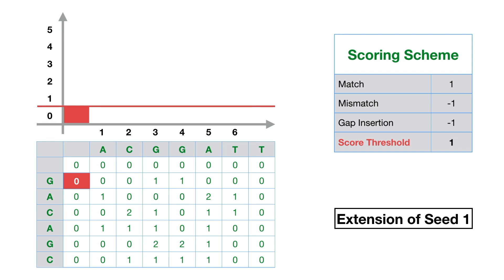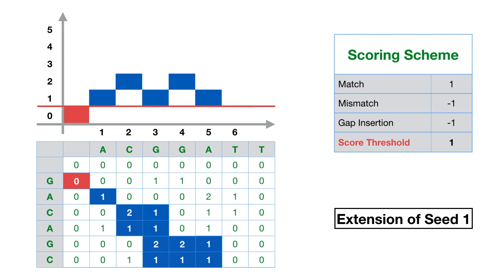Next, we have a score of 1, which is followed with a score of 2. The next scores are 1s, so we are still over the threshold. Then, we have scores of 2, followed with 1s. Since the next score is 0, the extension ends here.